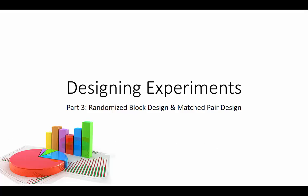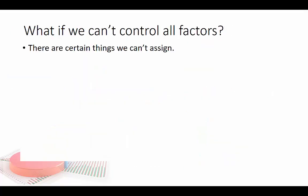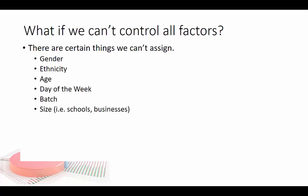A completely randomized design is not the only way to design an experiment. Sometimes it's difficult to keep other variables the same for all groups — there are certain things we can't control. We can't assign gender, ethnicity, age, day of the week, or factors like different days you're gathering fish, a production line, a batch, or the size of schools.